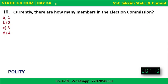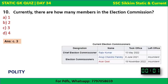Polity Question 5: Currently, how many members are there in the Election Commission? The correct answer is three — one Chief Election Commissioner, who is Rajiv Kumar, and two Election Commissioners, Anup Chandra Pandey and Arun Goyal. The previous Chief Election Commissioner was Sushil Chandra.